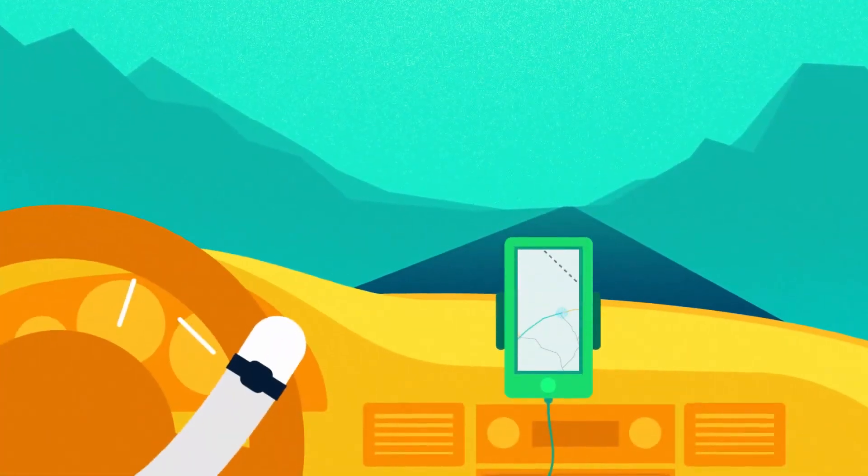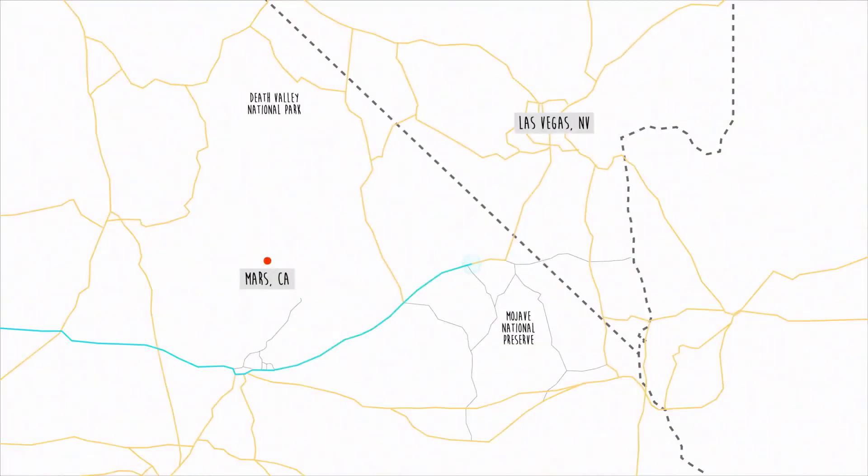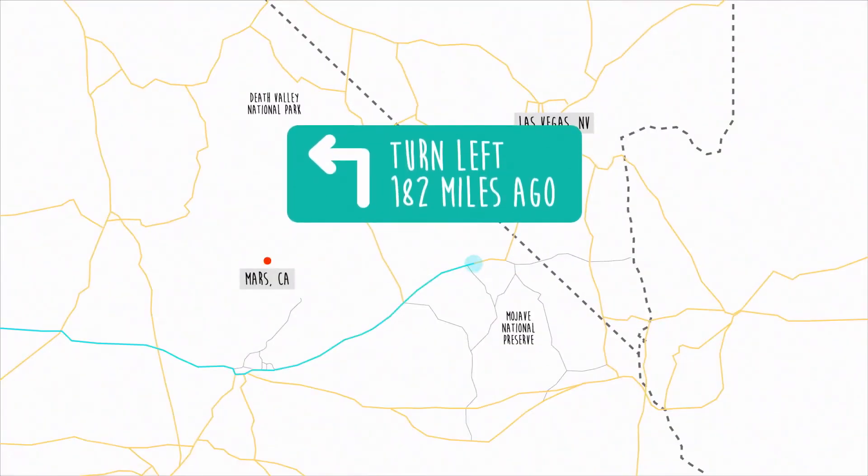Imagine if the GPS on your phone took 40 minutes to calculate your position. You might miss your turn or be several exits down the highway before it caught up with you.